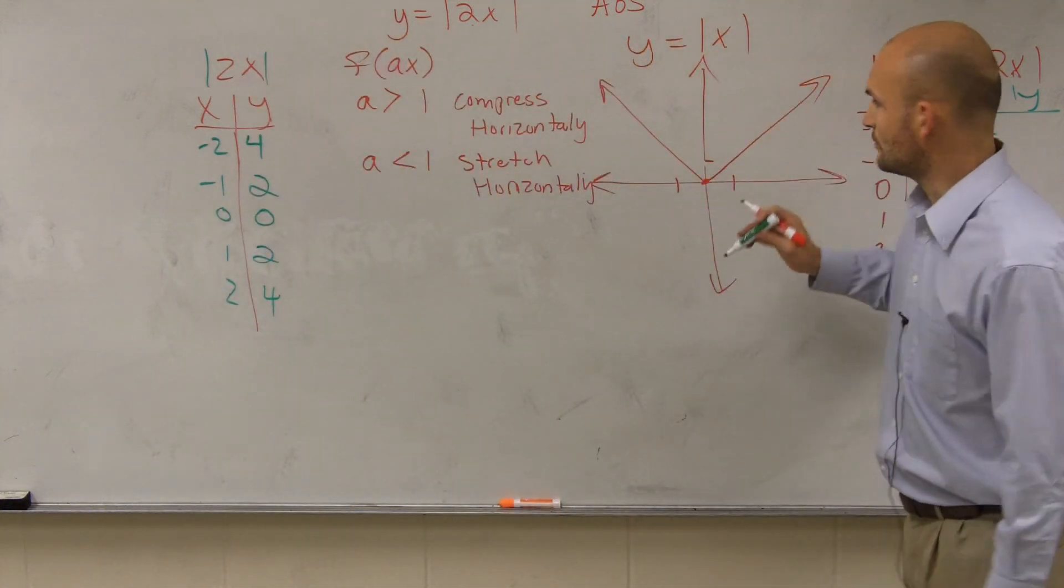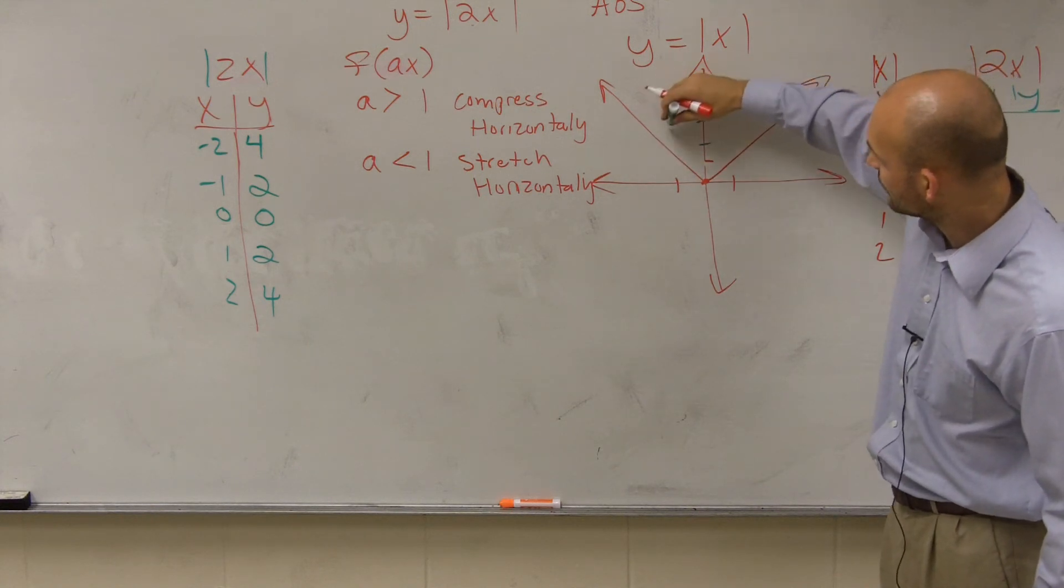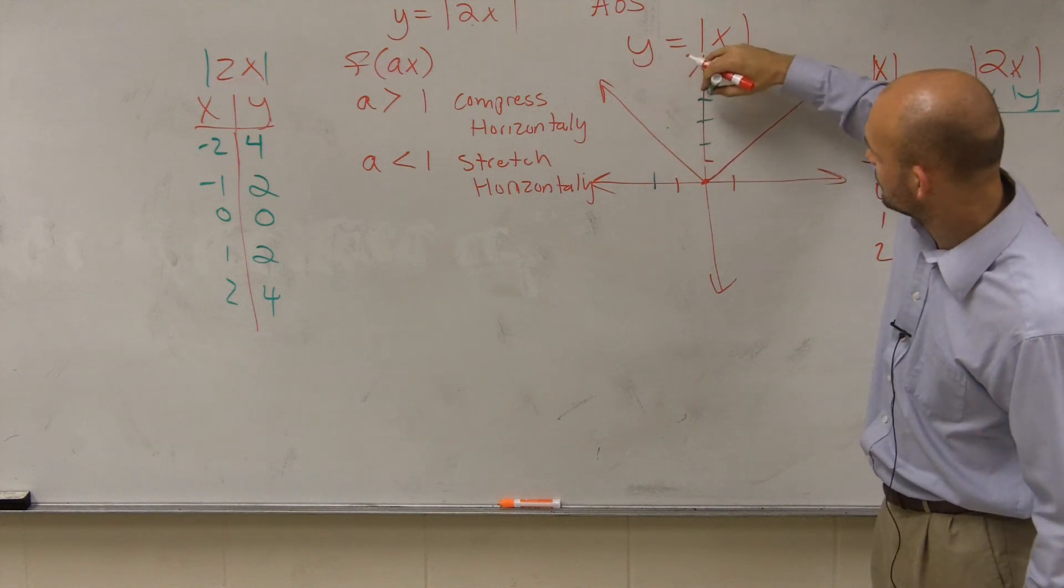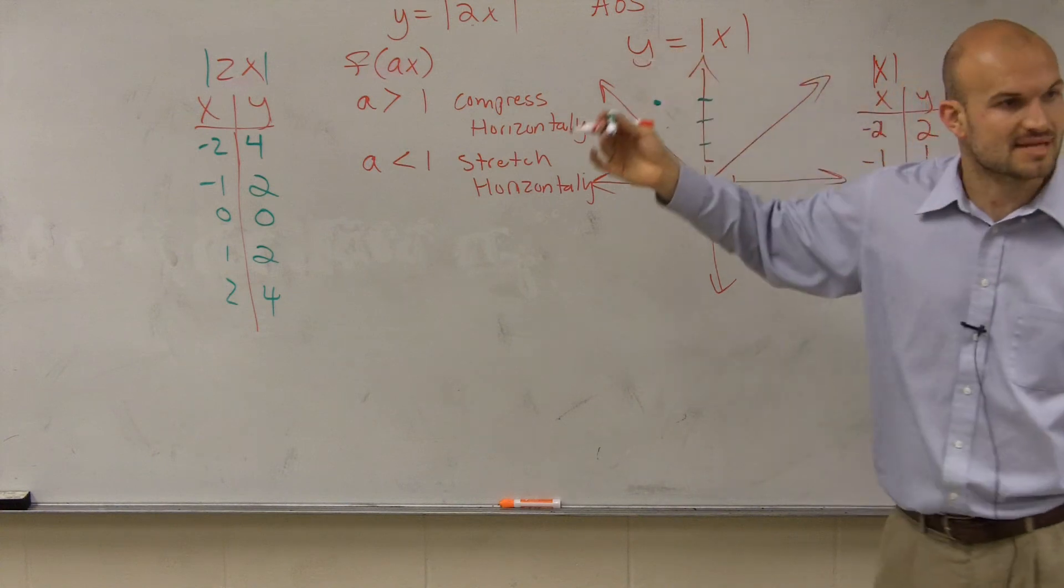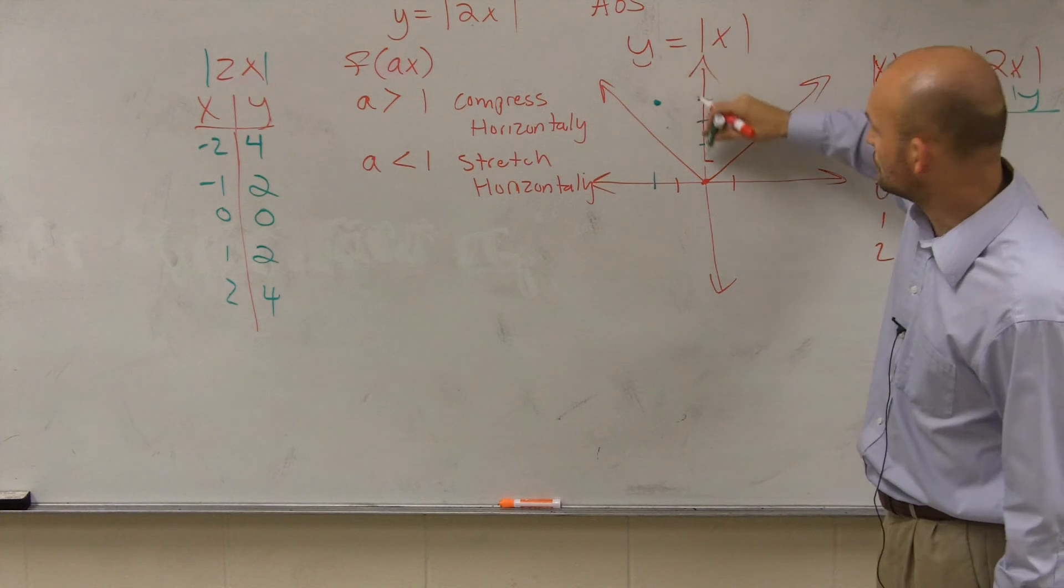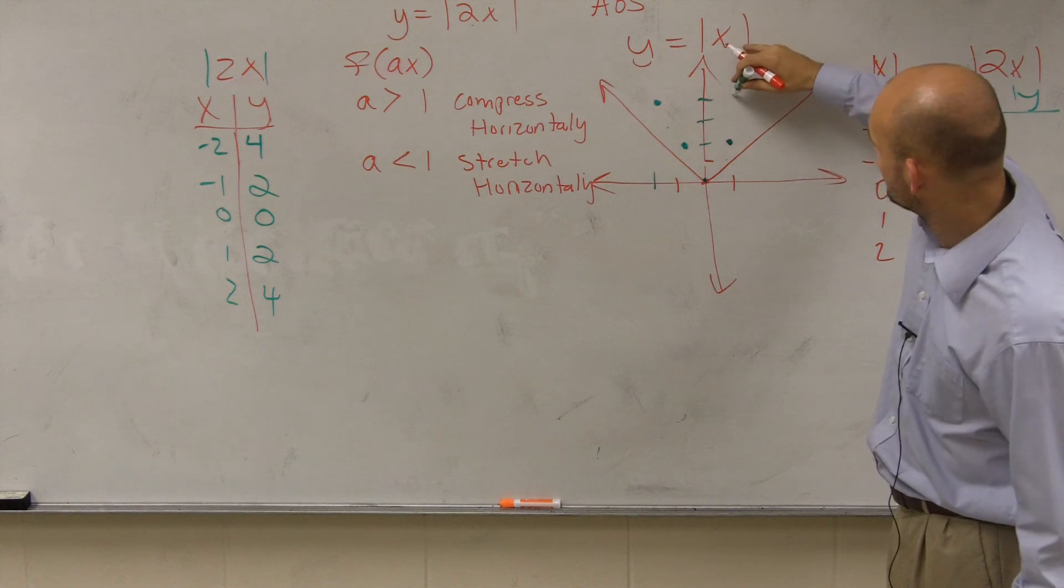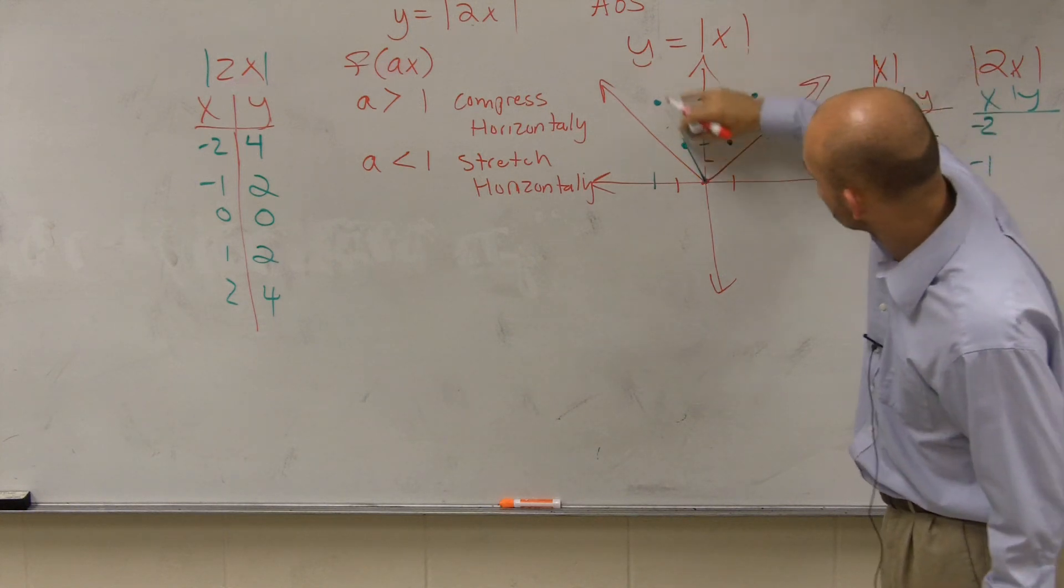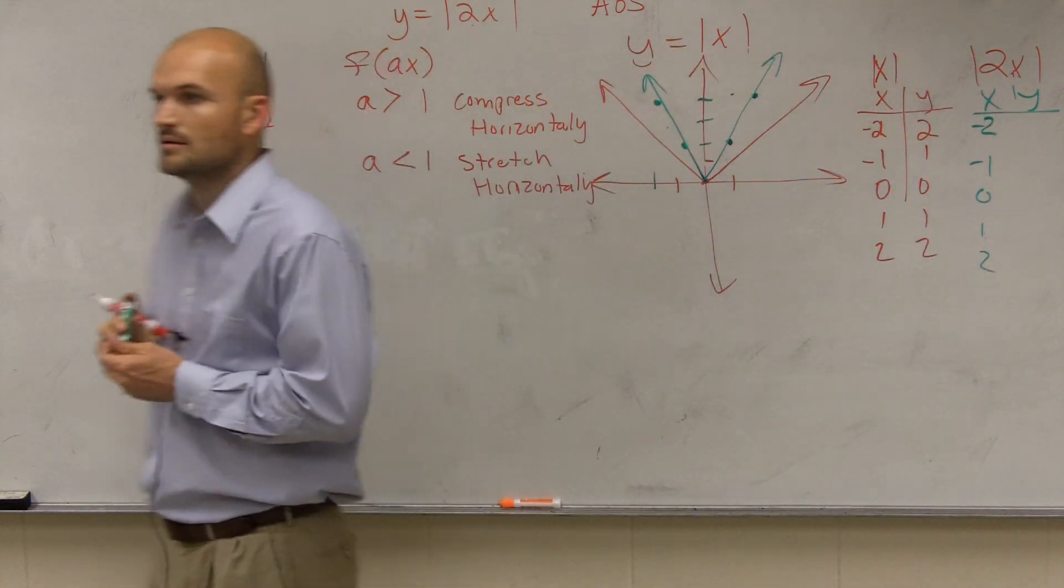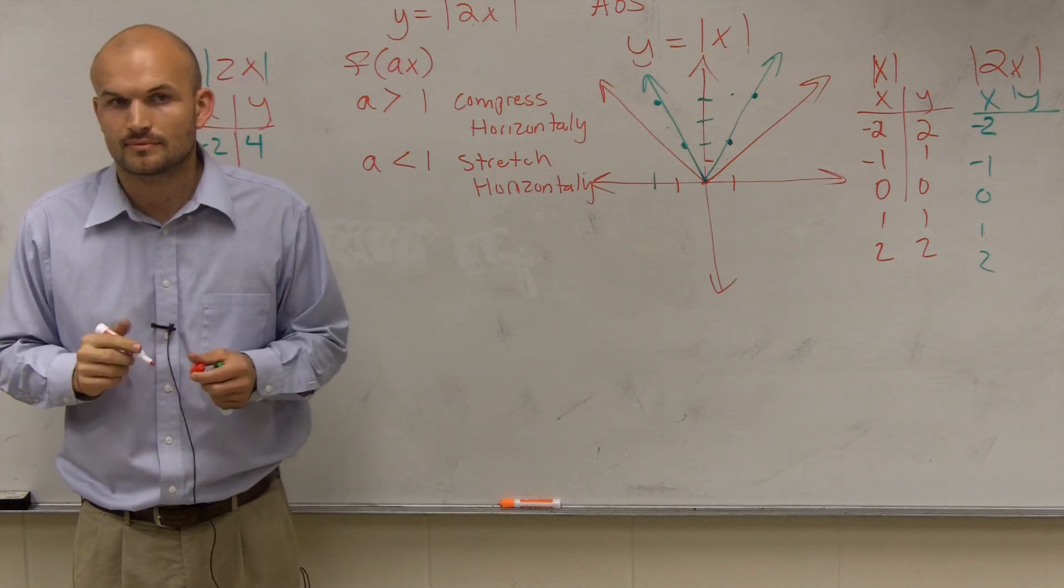So when you guys look at this, when I graph this, instead of going negative 2, 1, I'm now going negative 2 to 4. Yeah, so it becomes skinnier. Sometimes we say skinnier, fatter is kind of like the layman term. But then you can go negative 1 goes up to 2. 0 goes to 0. So now my graph looks like that. Does everybody see that? Catherine, you got that? Yeah?